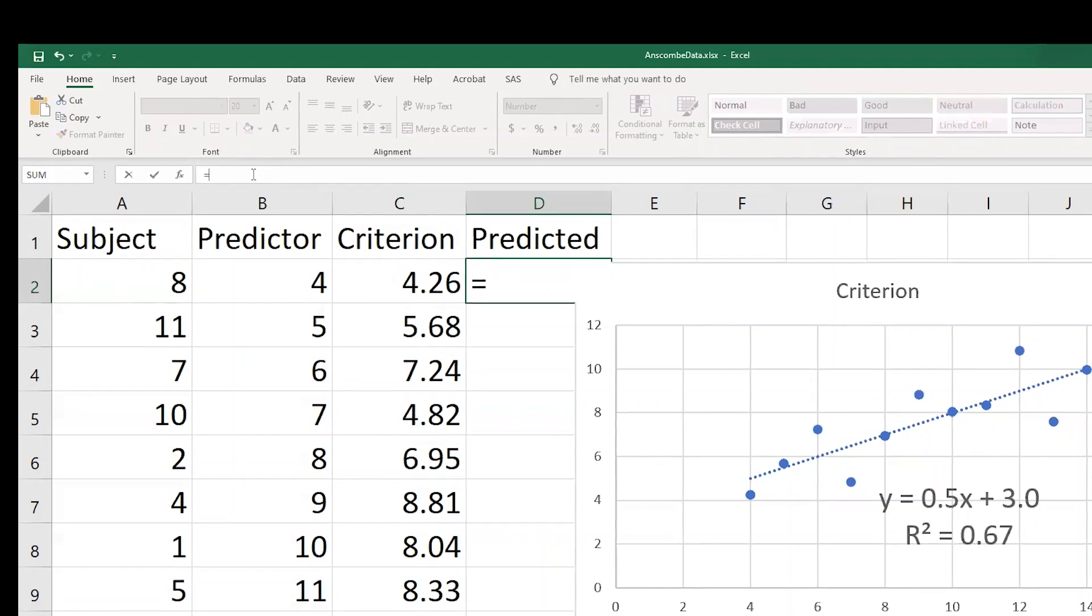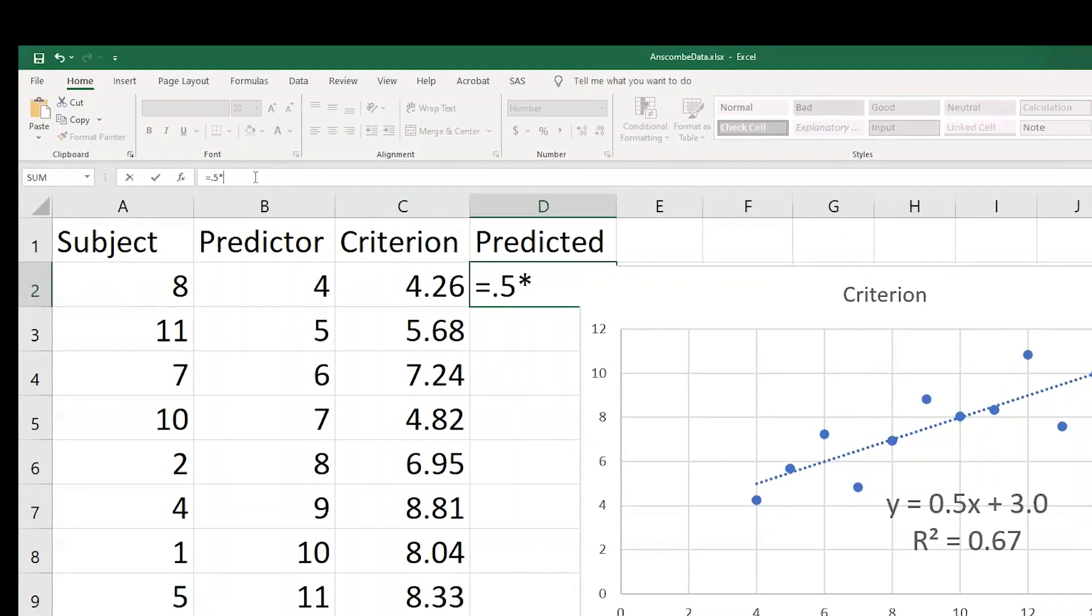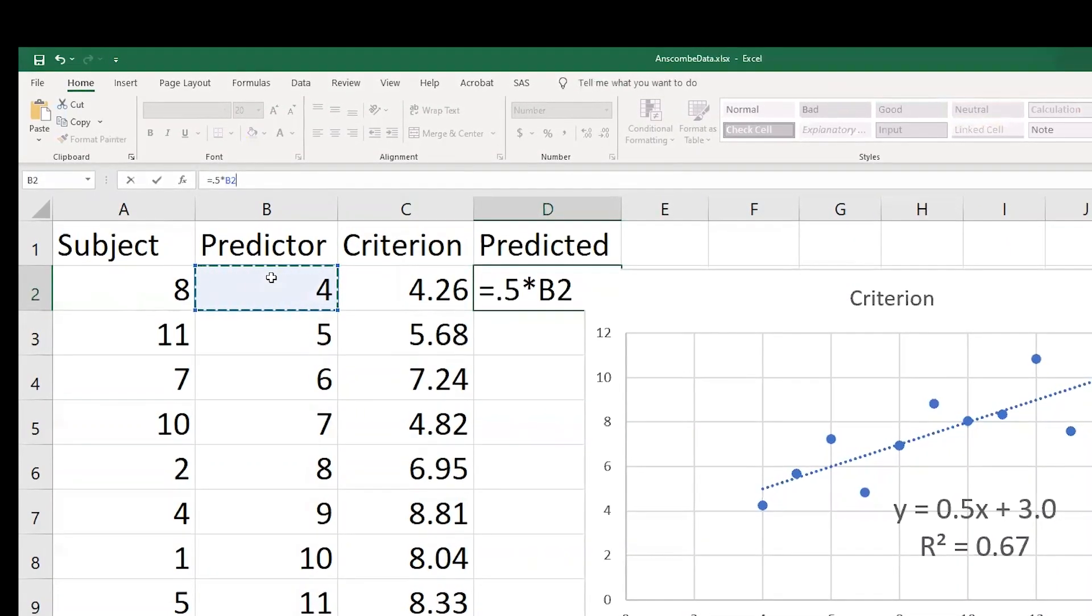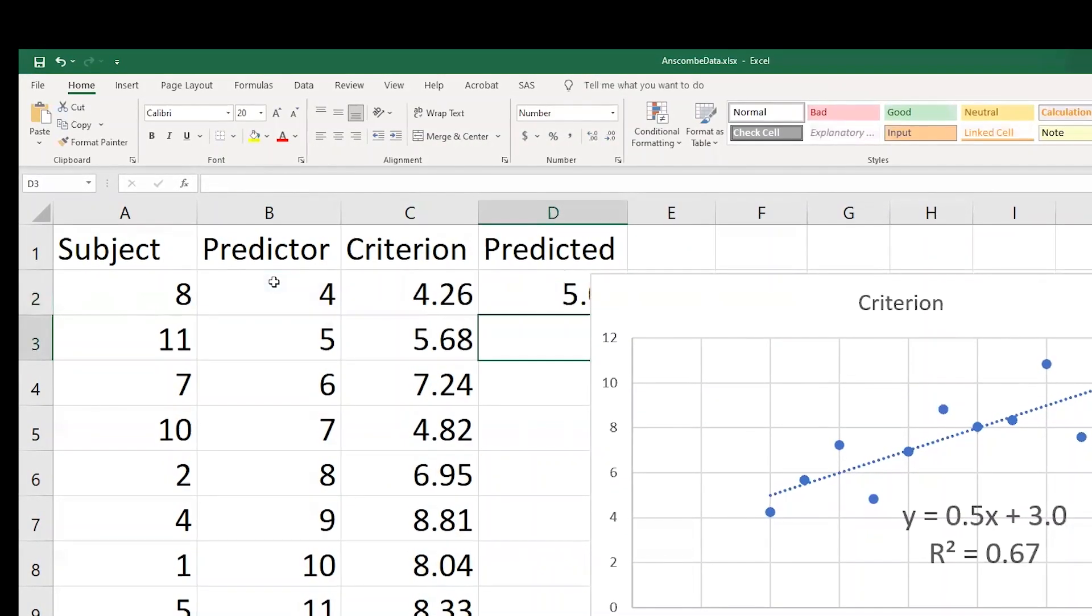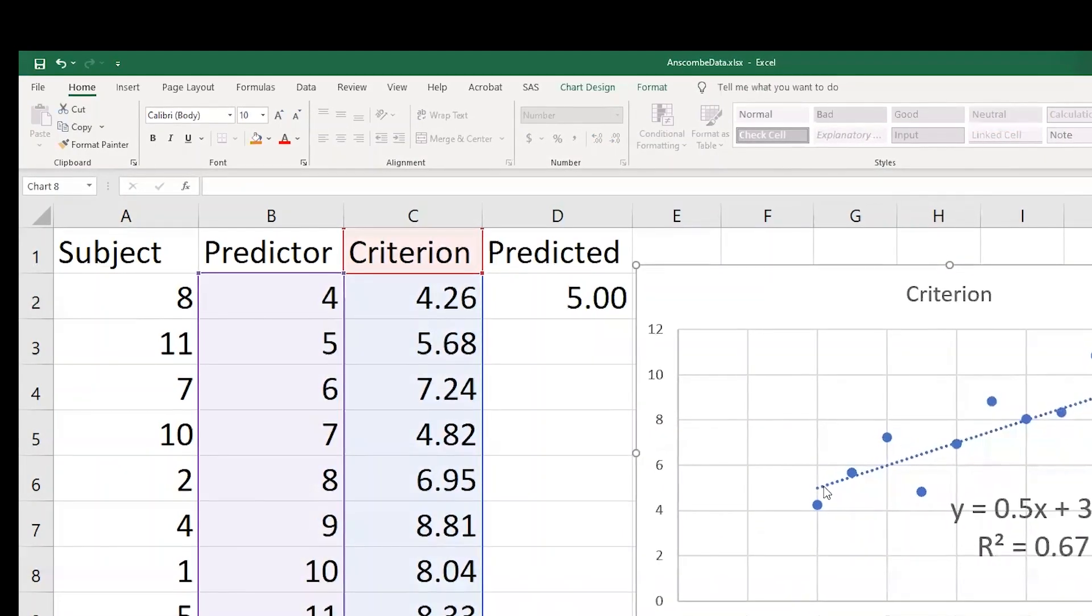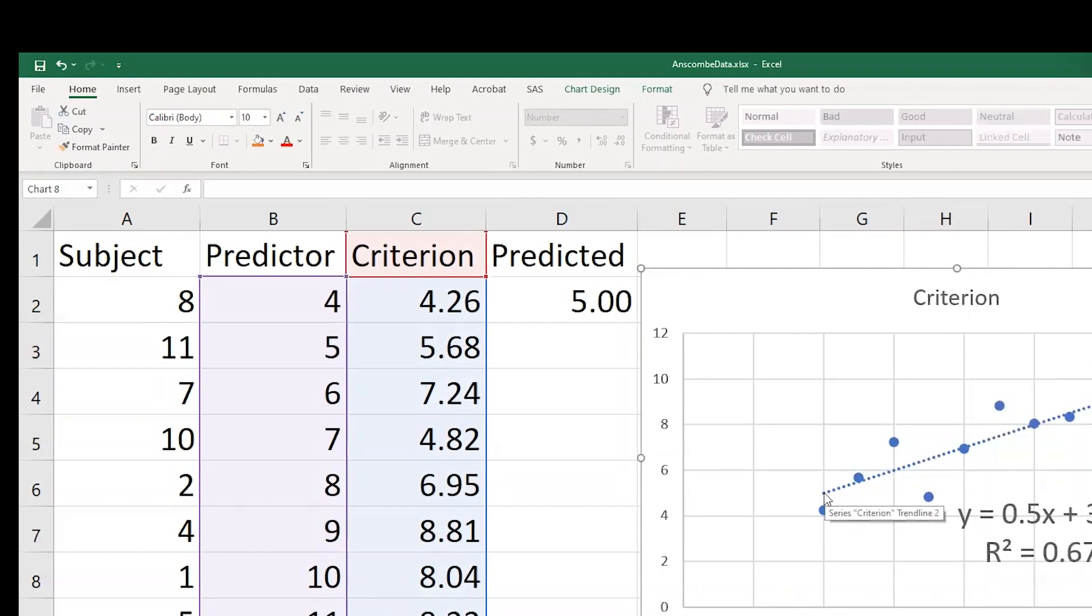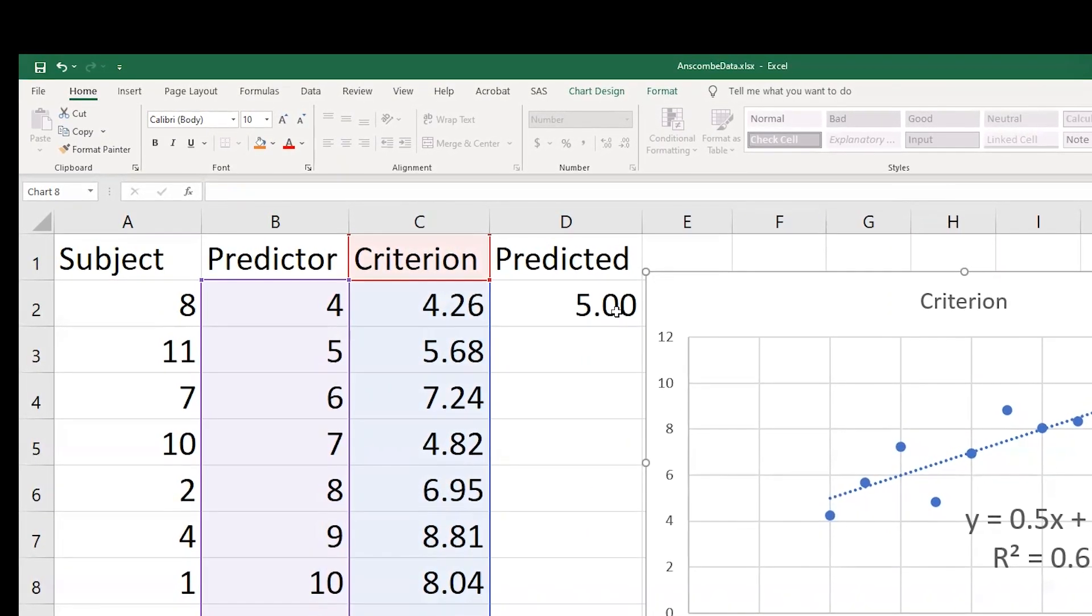And what I want to say here is 0.5 star for multiplication, that cell, plus 3, and I can hit return. And that's going to give me a value, a predicted value of 5 for this person, which is that value that you see right here on the line. So I'm predicting for this first person that they're going to get a 5.